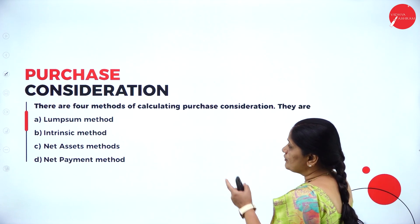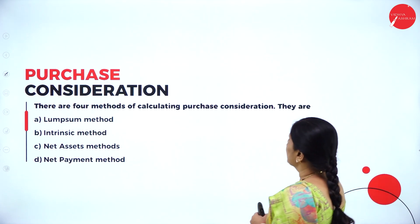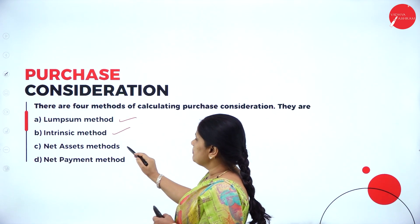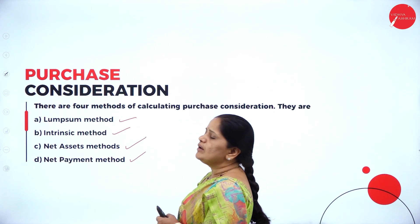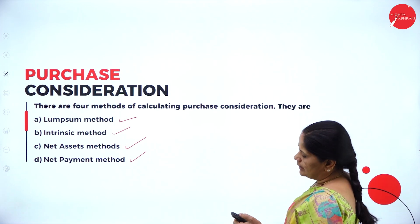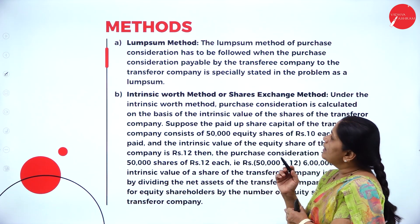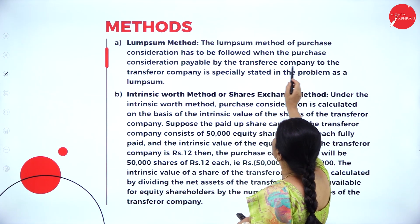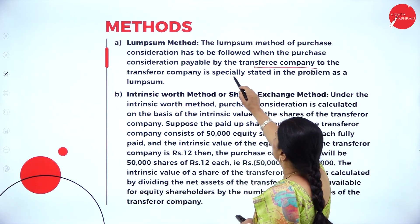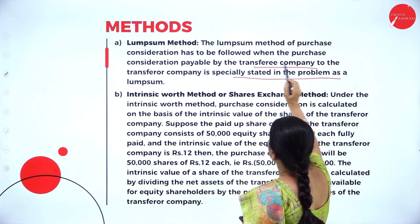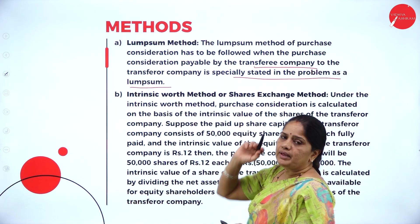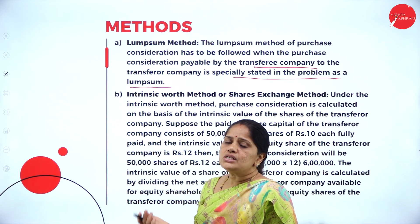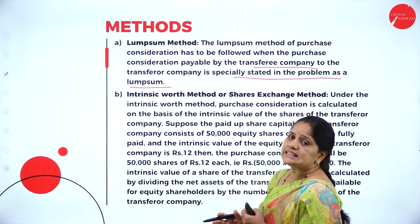There are four methods of calculating purchase consideration. The first is the lump sum method, which applies when purchase consideration payable by the transferee company to the transferor company is specifically stated as a lump sum. For example, if the problem states that purchase consideration was paid at rupees 10 lakhs, then it is the lump sum method.